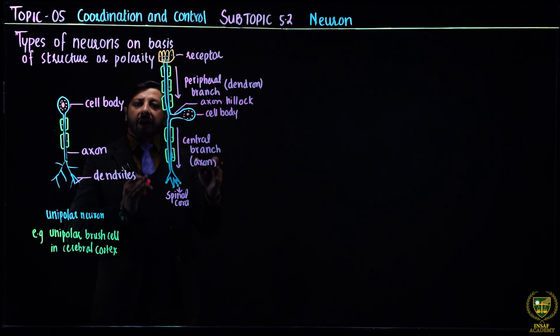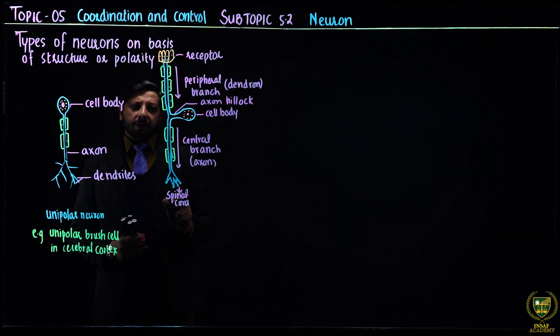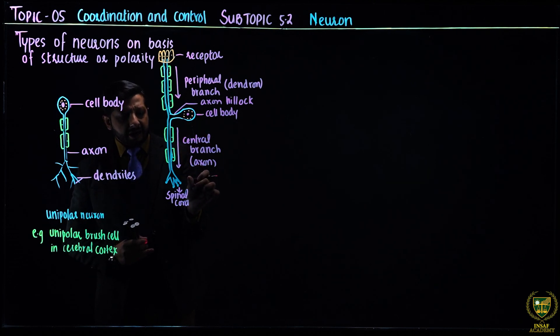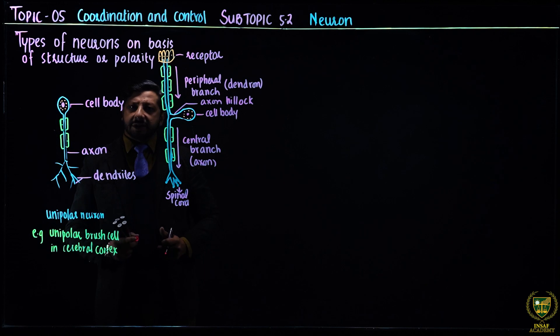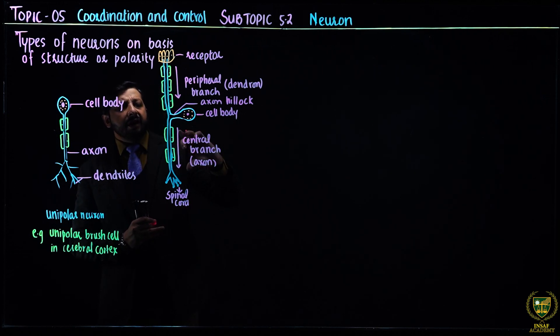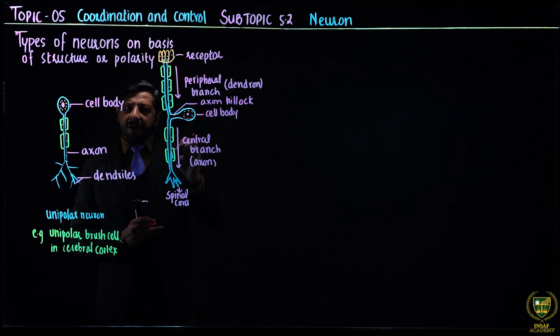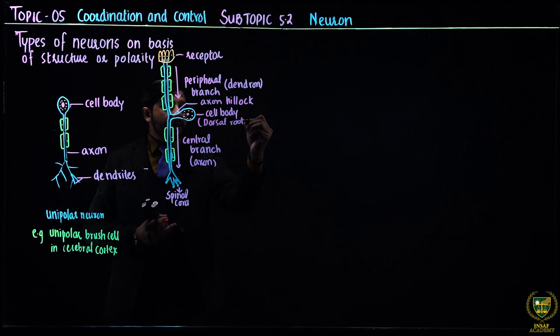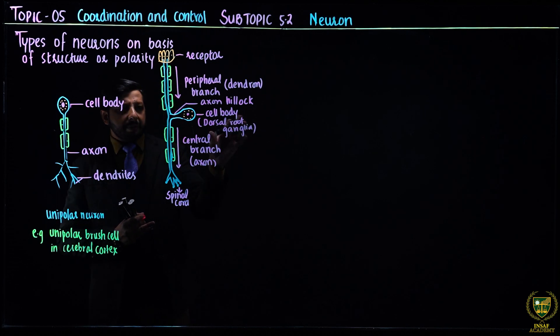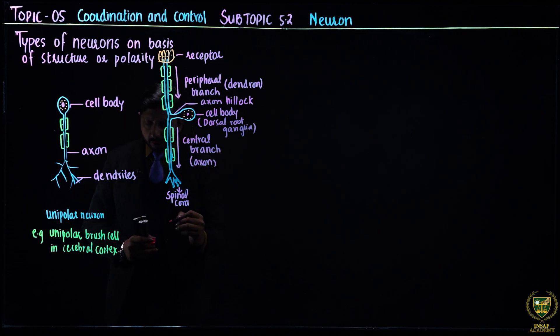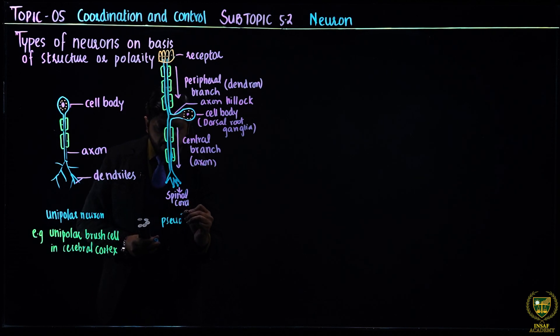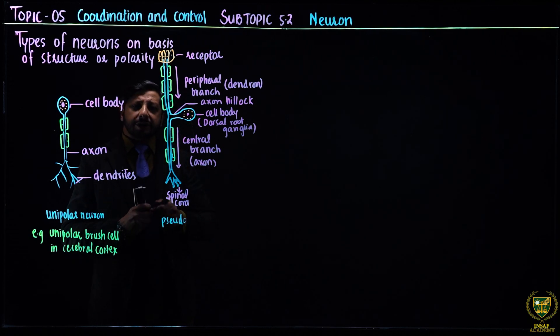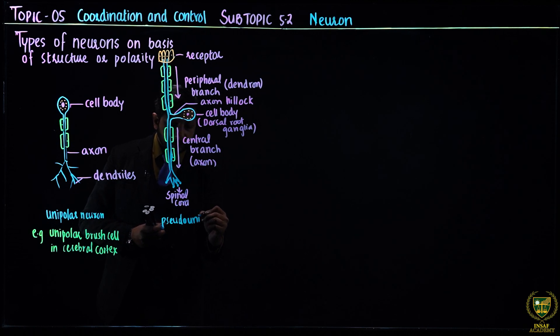This cytoplasmic or protoplasmic process divides into two branches. The upper branch is central branch and the lower branch is peripheral branch. Because it receives message from receptors, this is dendron, and the cell body carries message to the spinal cord.